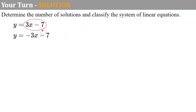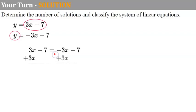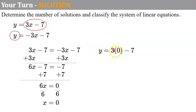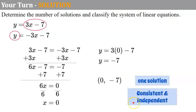Welcome back. I'll solve this using substitution since both equations are solved for y. I replace y in the second equation with the expression 3x minus 7, giving me 3x minus 7 equals negative 3x minus 7. Adding 3x to each side gives 6x minus 7 equals negative 7. Adding 7 to each side, 6x equals 0, so x equals 0. Substituting back, y equals 3 times 0 minus 7, so y equals negative 7. My solution is (0, -7), which means one solution — consistent and independent.